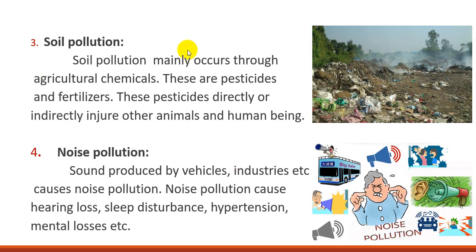Soil pollution is mainly happening through agriculture. The problem is the chemical use of pesticides, fertilizer, and chemicals. In the picture, there is much more in this soil.